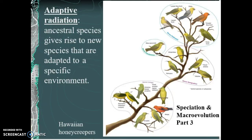We're going to wrap up our conversation about speciation and macroevolution. The big things to remember are how species change over time. Connect this back to previous chapters where we talked about mutations, natural selection, and genetic drift — all things that lead to different types of selection: directional selection, stabilizing selection, and disruptive selection. As species undergo those selection processes, they speciate, and what used to be the same species splits and becomes different species.